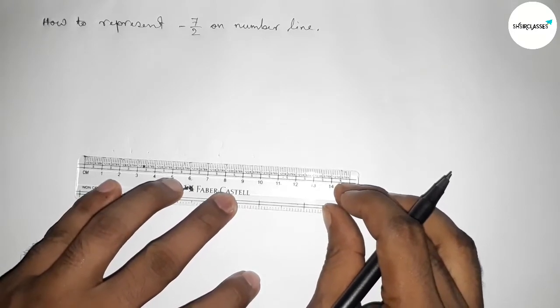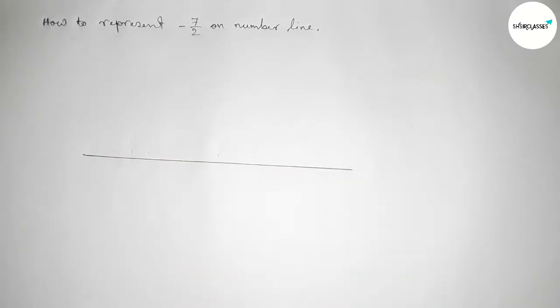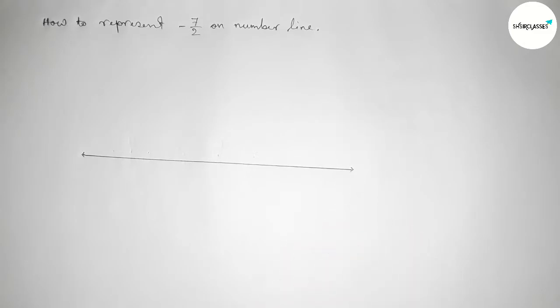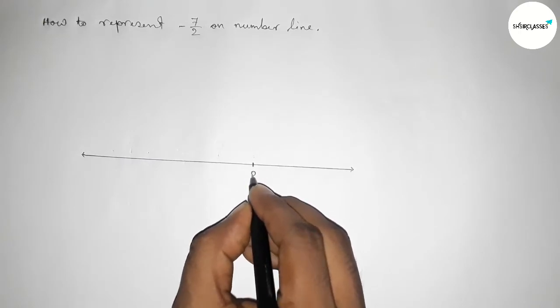So first of all, we have to draw here a number line. First, drawing here a line of any length and taking arrow marks on both sides. Now we have to first take here a starting number, here zero.